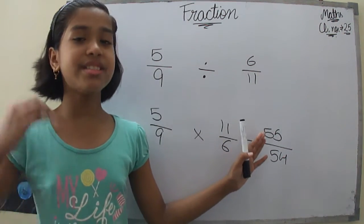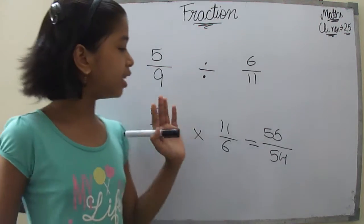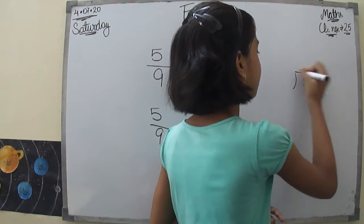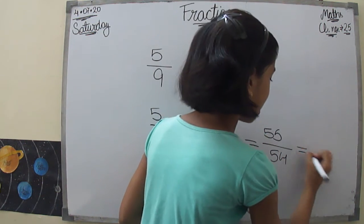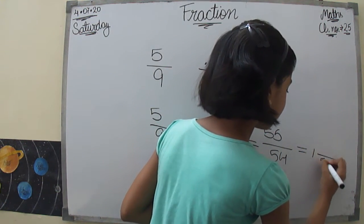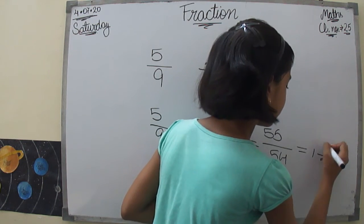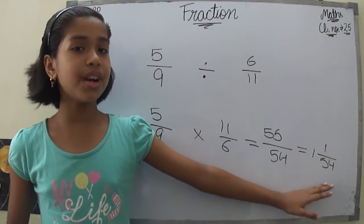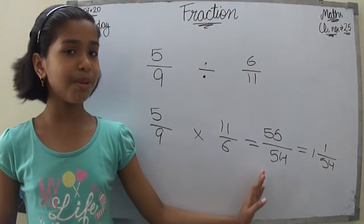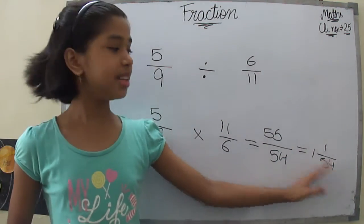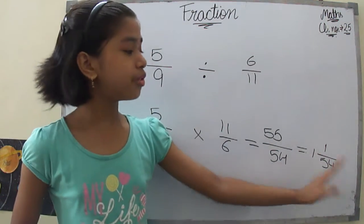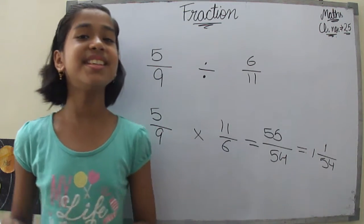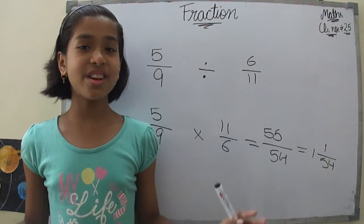To convert 55 upon 54 to a mixed fraction, just divide. We get 1 remainder 1, giving us 1 and 1 upon 54. We can verify by going back: 54 into 1 is 54, and 54 plus 1 is 55 — that's our original numerator. So the conversion is correct.